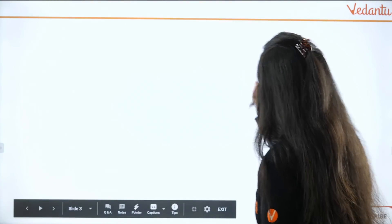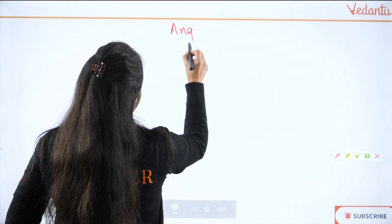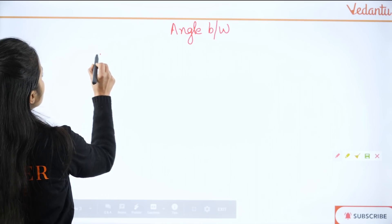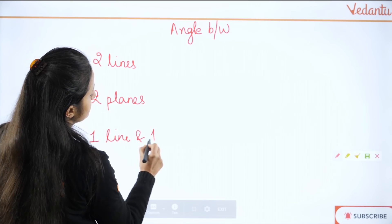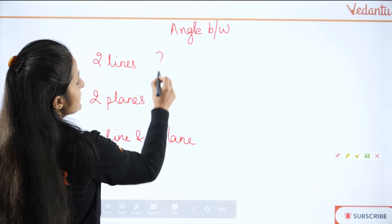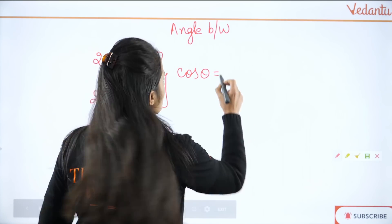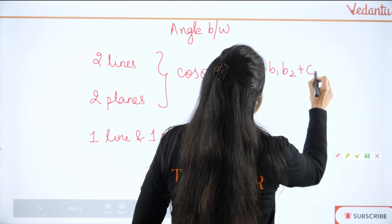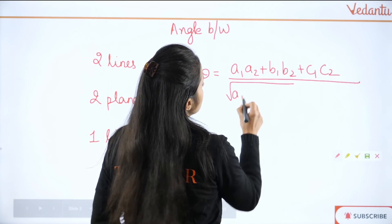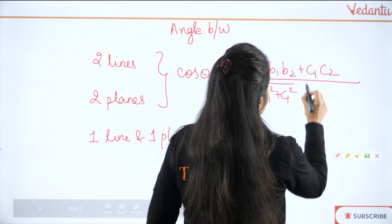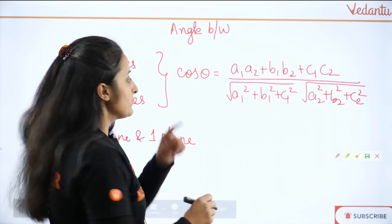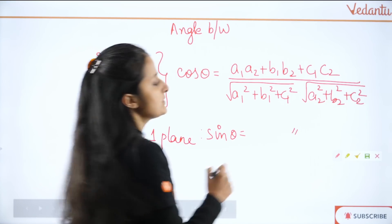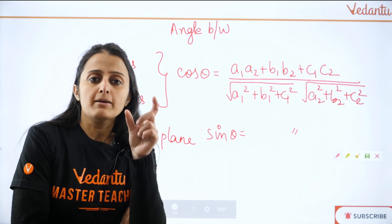And for now, let's roll. First of all, let's discuss a quick concept. I am talking about angle — angle between two lines, two planes, or when you have one line and one plane. For two lines or two planes, the angle formula is: cos θ = (a1·a2 + b1·b2 + c1·c2) / (√(a1²+b1²+c1²) · √(a2²+b2²+c2²)). But if I'm talking of one line and one plane, the same formula becomes sin θ equal to this. This looks like a small difference but it plays a huge role.